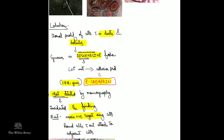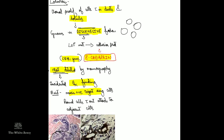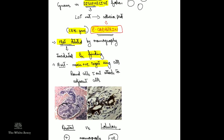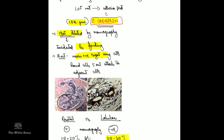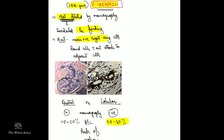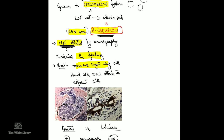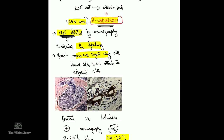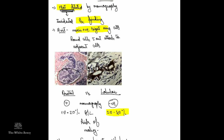In lobular carcinoma in situ there is clonal proliferation in the same ducts and lobules, but the difference is growth in a discohesive manner — meaning no cell-to-cell adhesion. This is due to a loss-of-function mutation in the CDH1 gene, which encodes E-cadherin, the protein responsible for cell-to-cell adhesion. Because there is not much desmoplastic reaction, LCIS cannot be detected by mammography and is an incidental finding on breast biopsy. Therefore, even after introduction of mammography as a screening procedure, the incidence of lobular carcinoma has not come down.